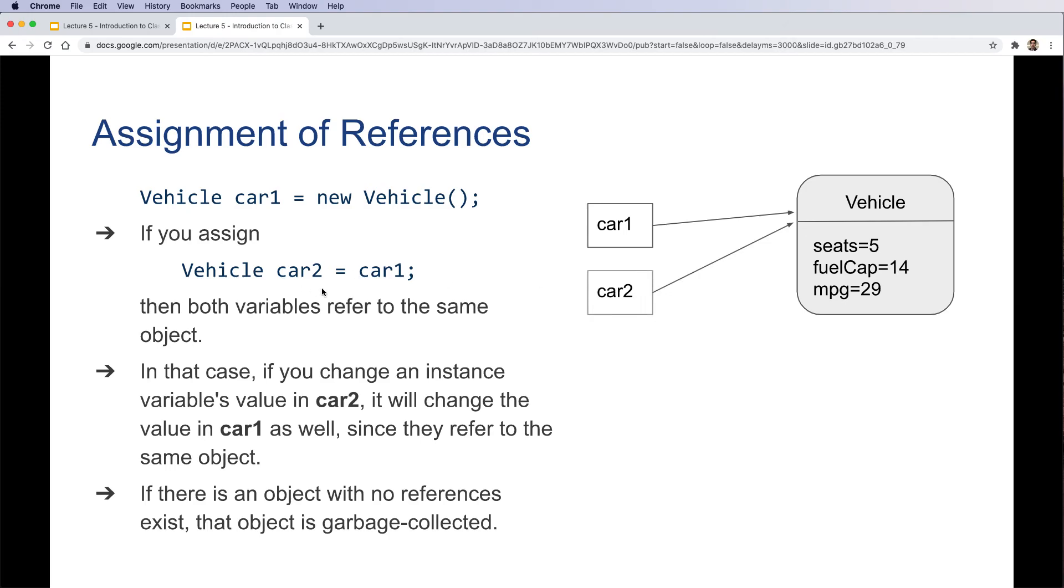Now we create a variable car2 that points to the same vehicle in memory. So any change done by car1 or car2 basically affects the same single vehicle in memory.